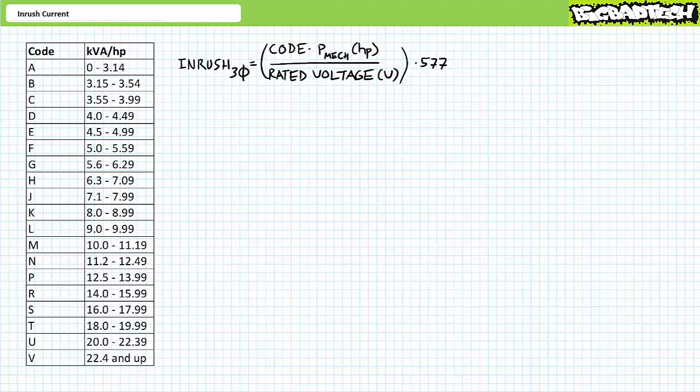As the motor comes up to rated speed, current will drop to the rated value. Full voltage — sometimes called direct online or across the line — motor starters must be designed to make inrush current. Inrush at times is an unwanted phenomenon that may affect the performance of other electrical devices in the same distribution system. If you've ever experienced the lights dim in an old kitchen upon starting up a blender or a vacuum cleaner, this is the result of inrush.